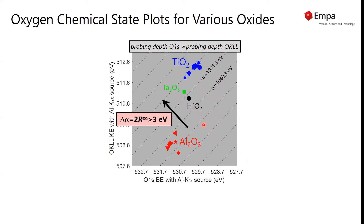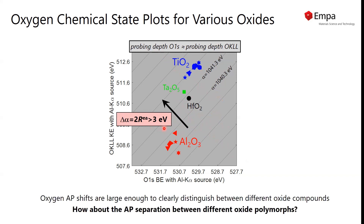We can very nicely distinguish the Auger parameter shift for oxygen between the different oxides. The differences or shifts are larger than 3 eV, which is a huge effect. The question arises whether we can also use the Auger parameter shift of oxygen to separate between different oxide polymorphs.